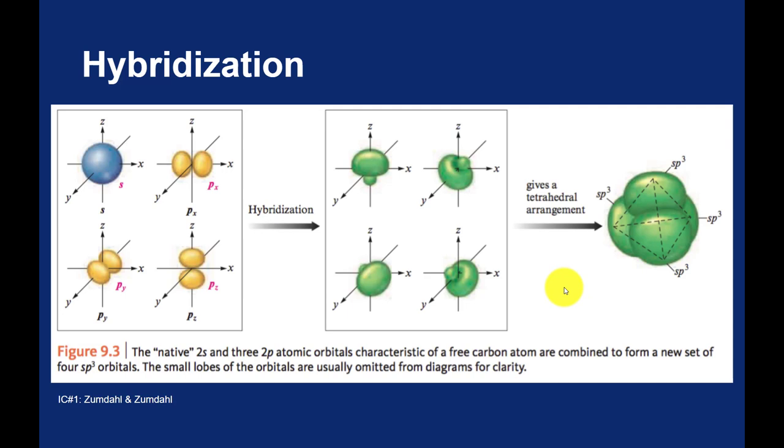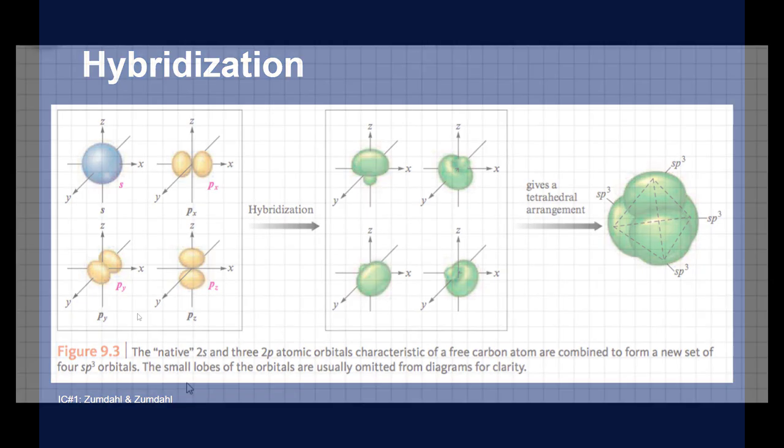When you blend these orbitals together and bring them together, you now have four independent bonding sites. And they are spaced at 109.5 degree bond angles, resulting in a tetrahedral shape. So the carbon in methane has hybridized orbitals. It is an sp3 hybridization with one electron in each of those four orbitals. And it's those orbitals that overlap with the s orbitals in the hydrogen atoms to make methane.